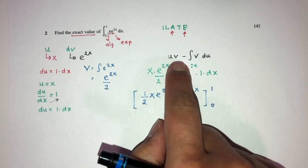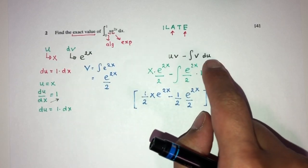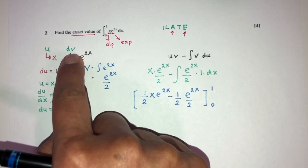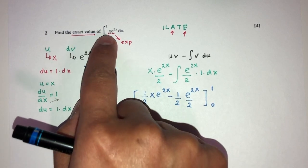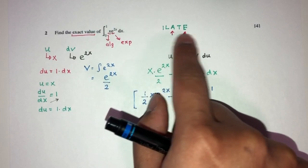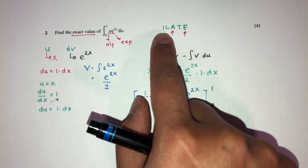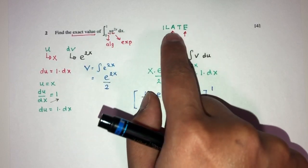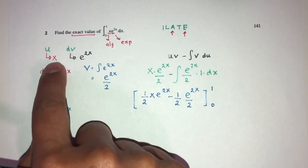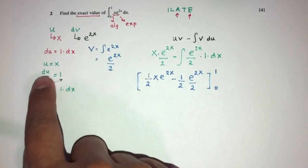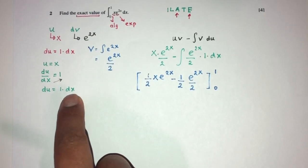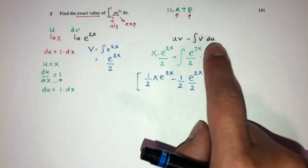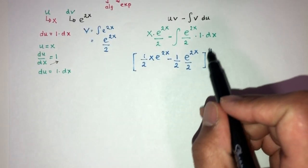The key steps were: identify integration by parts, apply the ILATE rule to assign u = x (algebraic) and dv = e^(2x) dx (exponential). Differentiate to get du = dx and integrate to get v = e^(2x)/2. Then place everything back in the formula uv − ∫v du and simplify.